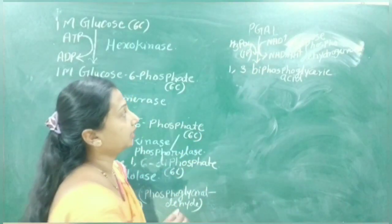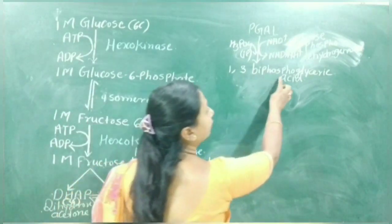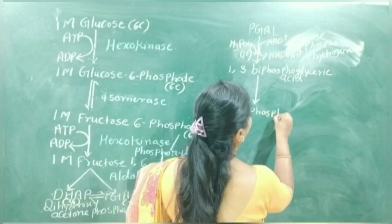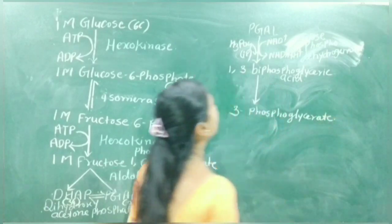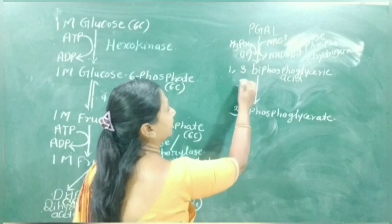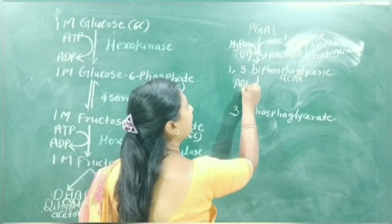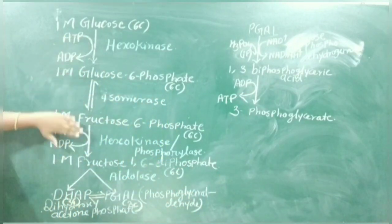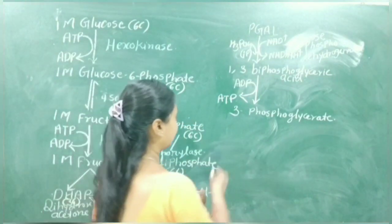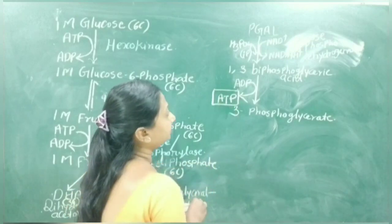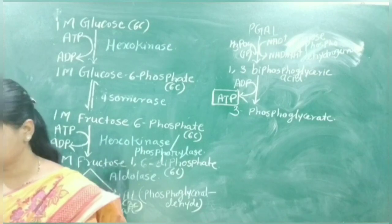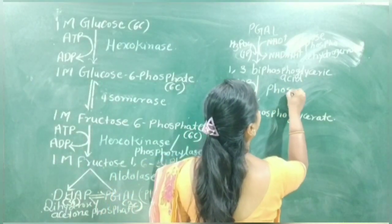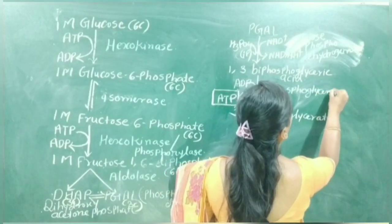1,3-biphosphoglyceric acid is converted into 3-phosphoglycerate. Here one phosphate is lost, taken up by ADP and converted into an ATP molecule — so energy is generated in this step. The enzyme that helps is phosphoglycerate kinase.